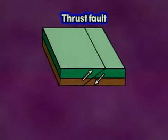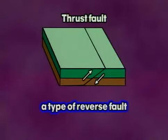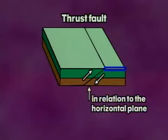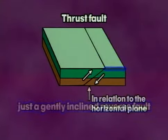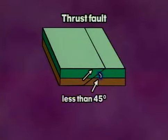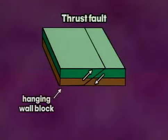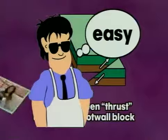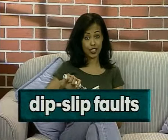A thrust fault is a type of reverse fault. The fault plane of a thrust fault lies at a low angle in relation to the horizontal plane — it's essentially a gently inclined reverse fault. The dip angle of a thrust fault is less than 45 degrees. The hanging wall block looks like it's been thrust up over the foot wall block. Now you know what the dip-slip faults are.